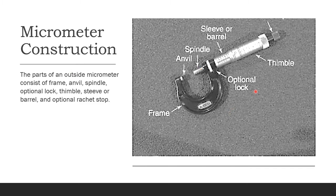The parts of an outside micrometer consist of: the frame, the anvil, the spindle that can be rotated, an optional lock, the thimble you rotate to change the barrel scale reading, the sleeve or barrel, and the optional ratchet stop to stop your measurement.